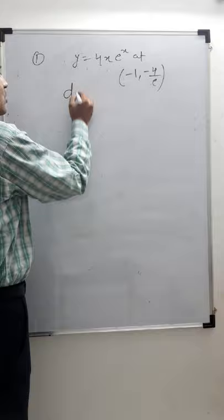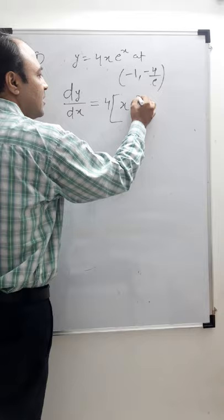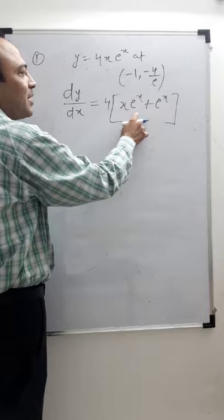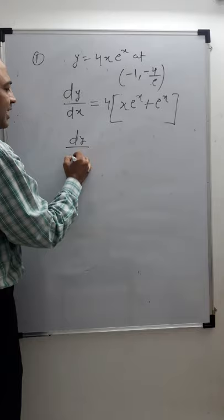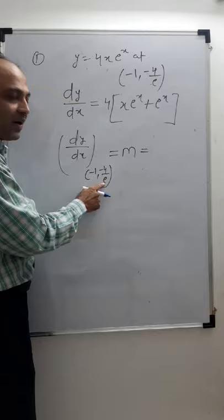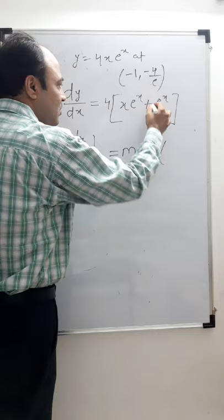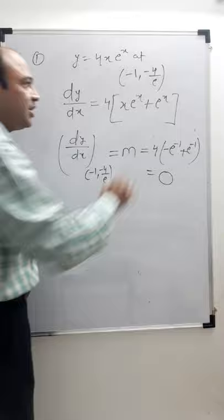dy/dx: 4 is constant, and we apply the product rule to x·e^x, giving dy/dx = 4(e^x + xe^x) = 4e^x(1 + x). Now at the point (−1, −4/e), we substitute x = −1: dy/dx = 4e^(−1)(1 + (−1)) = 4e^(−1)(0) = 0. So dy/dx = 0, which means the tangent is parallel to the x-axis.